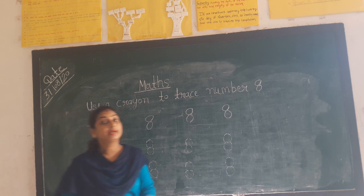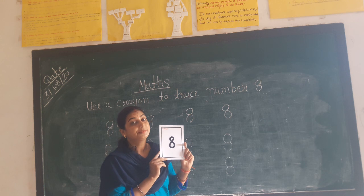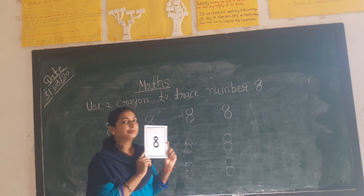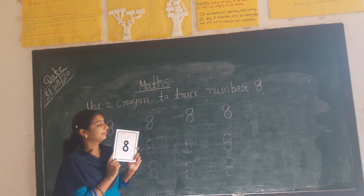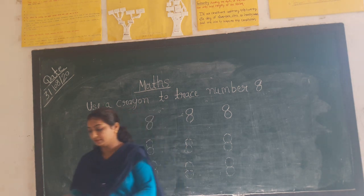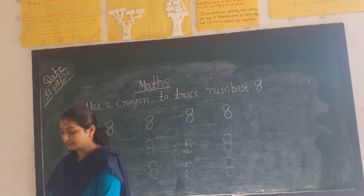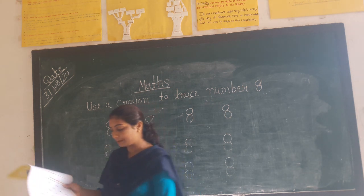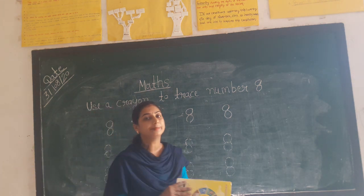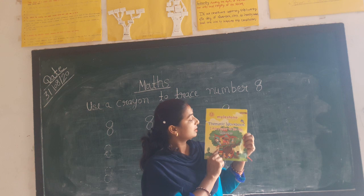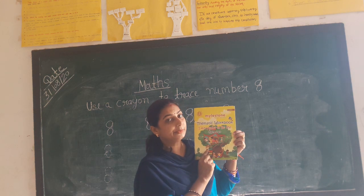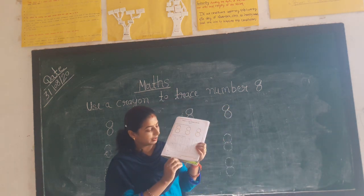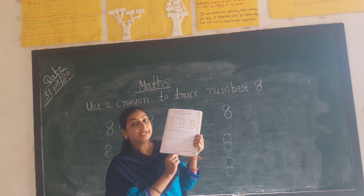How to write the number 8? Number 8 — press it to write directly. So please all of you today open your books. Now open your books. Book's name is 3-2, page number 25.